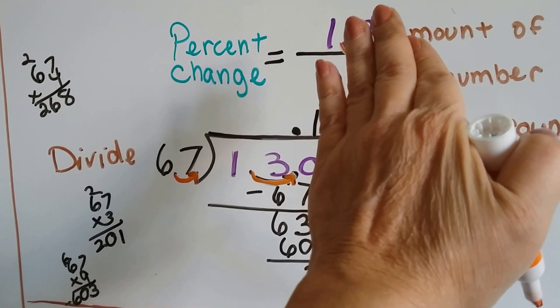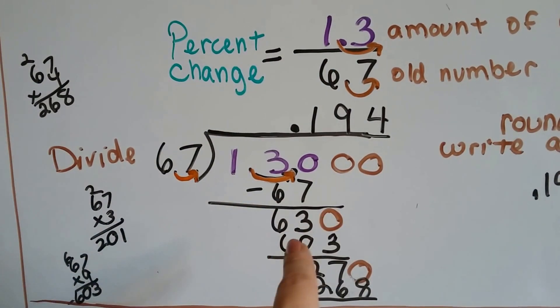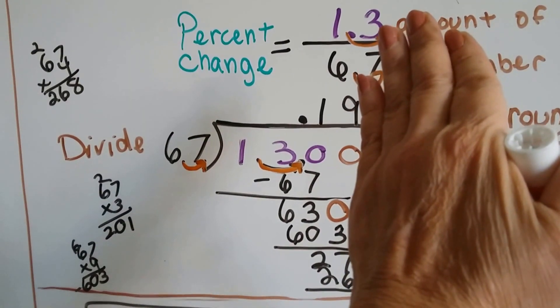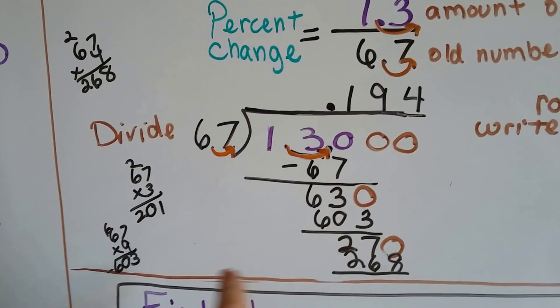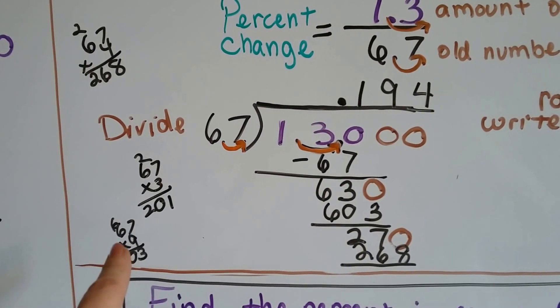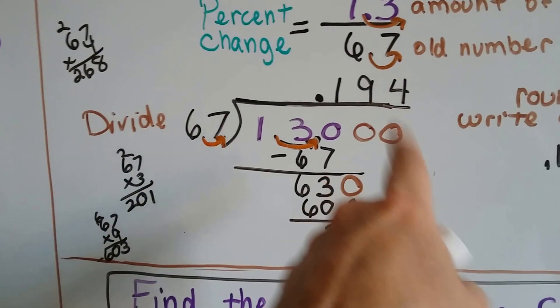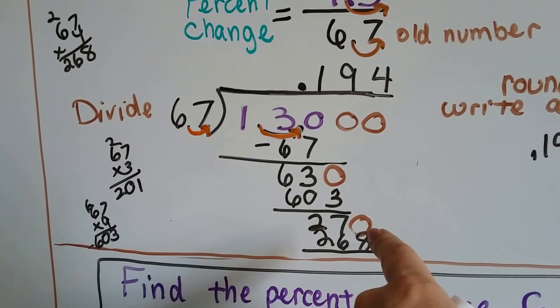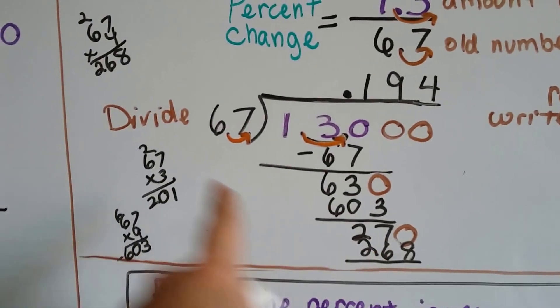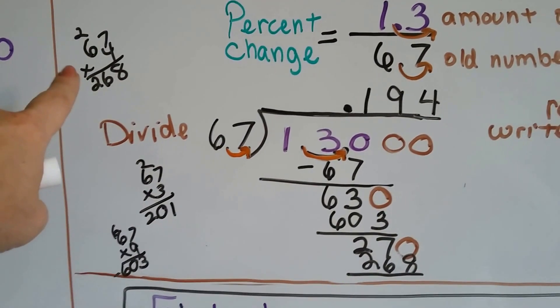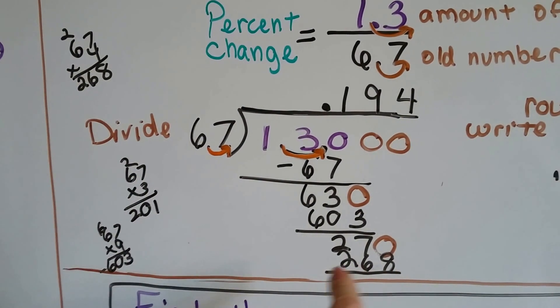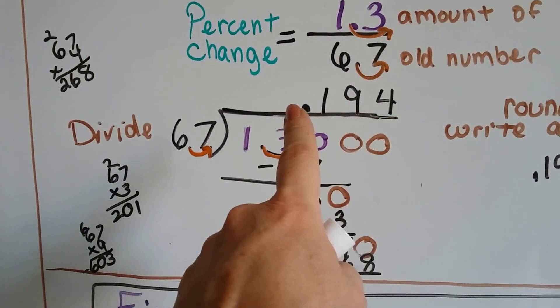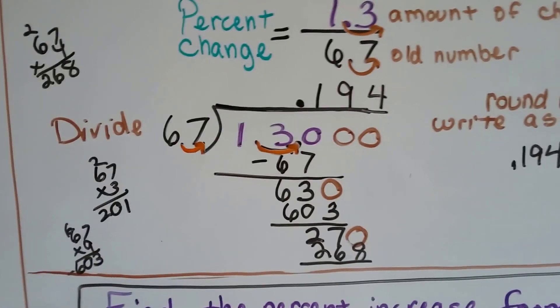It'll fit in one time. We do our subtraction and get 63. We add a 0, drop it down, and how many times can 67 fit into 630? Do a little math on the side, and 603 is 67 times 9, so I put a 9 here. And I put the 603, do the subtraction, get a 27, drop another 0. 67 can go into 270. Did a little multiplication on the side, 268. You can take that away and get a 2 left over, but we're trying to find a percent. We don't want to get too far away from that decimal point.